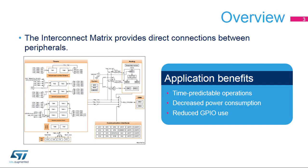The Interconnect Matrix, integrated inside STM32 microcontrollers, provides direct connections between peripherals. Applications benefit from these interconnections to ensure time-predictable operations and decrease power consumption. This matrix avoids complex management of peripheral communications through reading and writing registers using CPU instructions. In some cases, it reduces the need to loop a signal from a source to a destination through a dedicated GPIO.